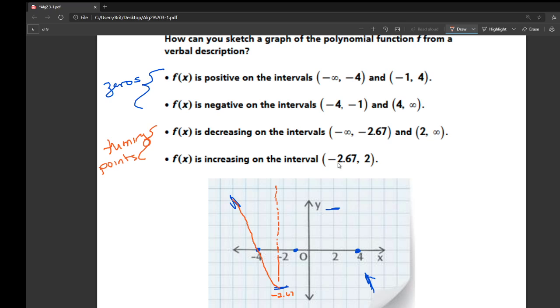So then it starts increasing from negative 2.67 to positive 2. So it's going up from here to here. Now it's important to note it has to go through the 0, right, where it crosses. So it's probably something like that.